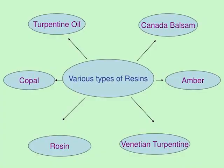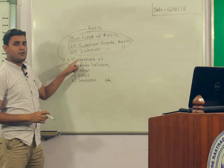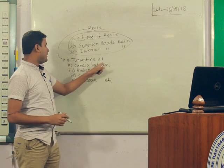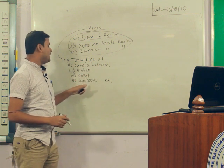Other types of resins include turpentine oil, Canada balsam, amber, copal, sandarac, and others.